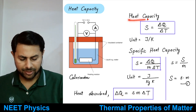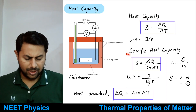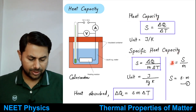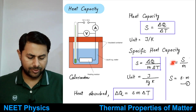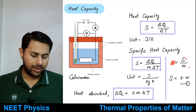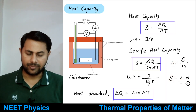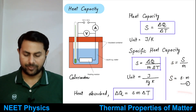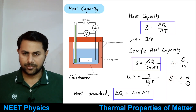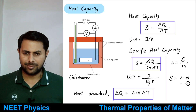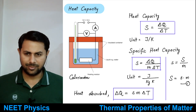The relation between heat capacity and specific heat capacity is very simple: small s equals capital S divided by m, or capital S equals small s multiplied by m.